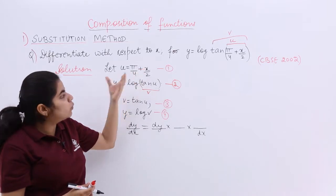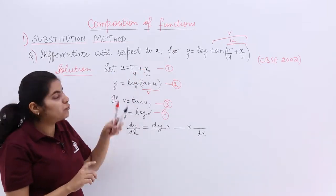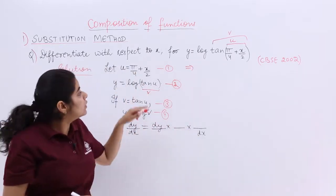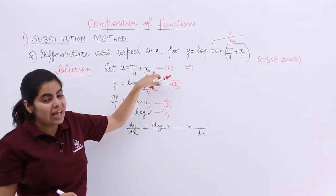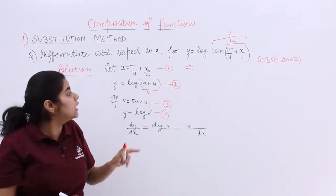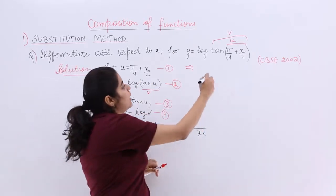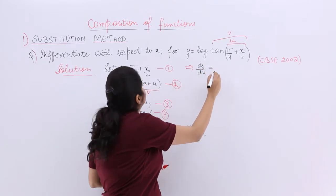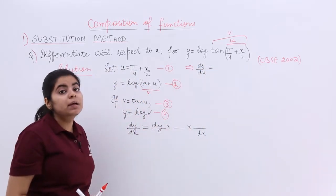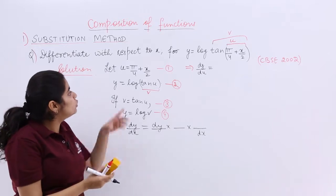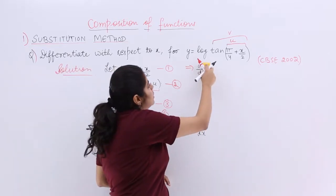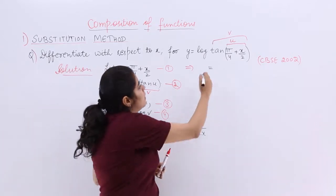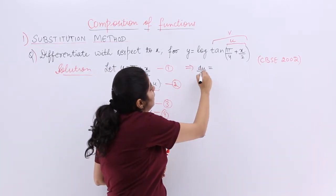Now, from here we can do what? From this step, from the first step, we can do something called differentiate with respect to x. That statement you will be writing. I am not writing it. Differentiate with respect to x. So it becomes du by dx because it is u and x into consideration. So it becomes du by dx. Let's make it more clear. It becomes du by dx.